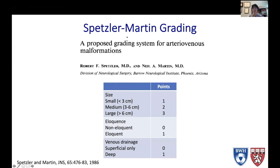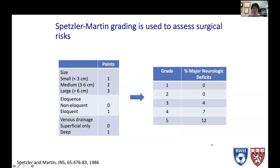I'll mention the Spetzler-Martin grading system — whenever you talk to a neurosurgeon about an AVM, somebody will ask you what the Spetzler-Martin grade is. This is a grading system developed by Dr. Spetzler and Martin back in 1986, where points are given to an AVM for size — one, two, or three points depending on whether it's less than three centimeters, between three and six centimeters, or greater than six centimeters — one point for eloquence, and one point for drainage into the deep venous system. This grading system was meant to assess surgical risk, which we're not covering today.